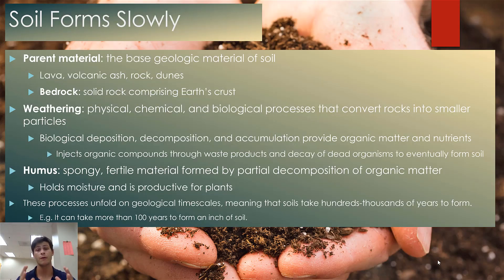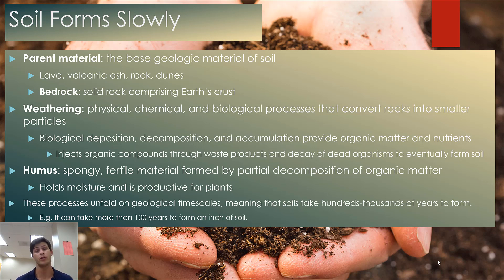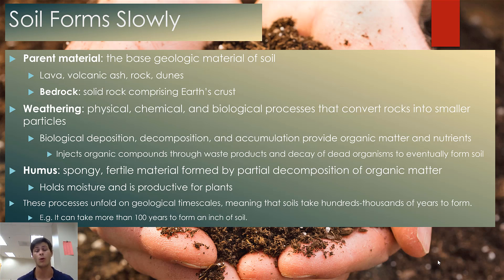Soil forms slowly because it has to start from scratch to go from a very raw base material to the complex system we see today. Soil starts from parent material — completely mineral-based geologic material originally composing the soil. This comes from raw inorganic material such as lava, volcanic ash, rock, and in Florida, sand dunes. The primary component of parent material is bedrock: solid rock directly comprising the Earth's crust with no pore space.